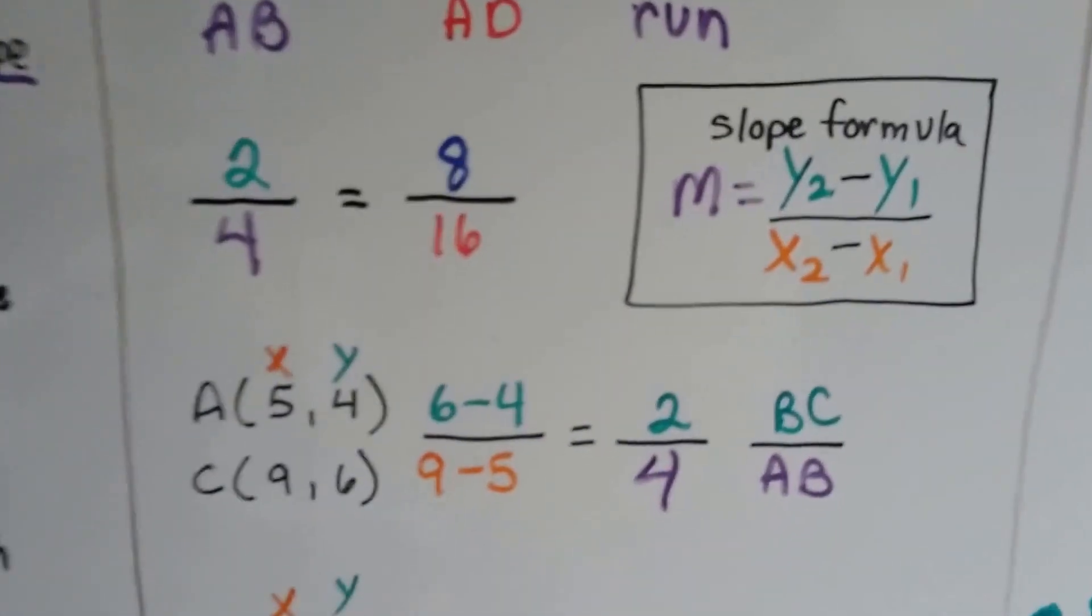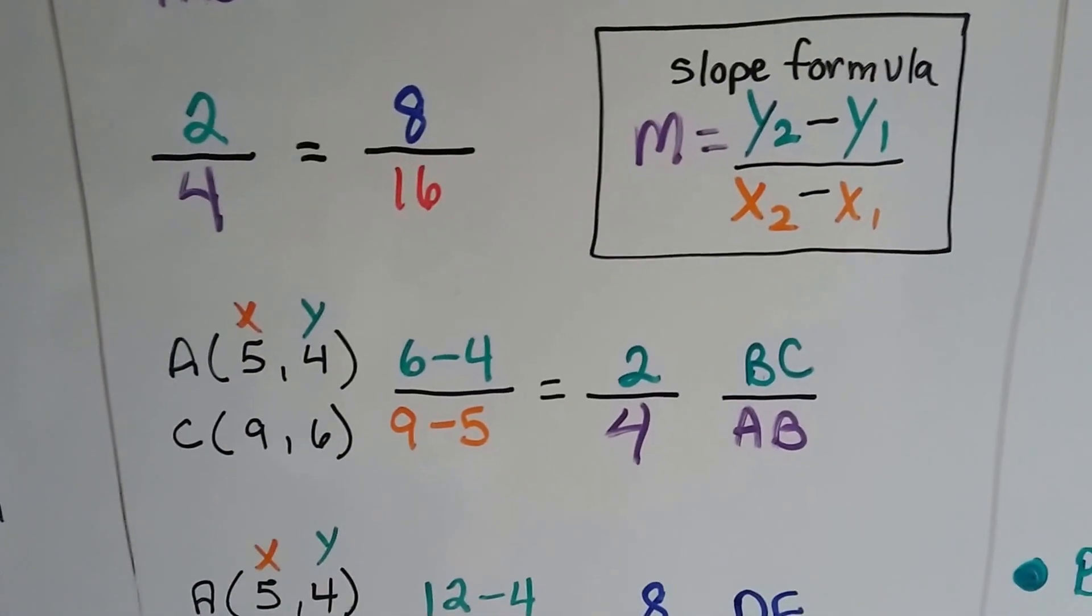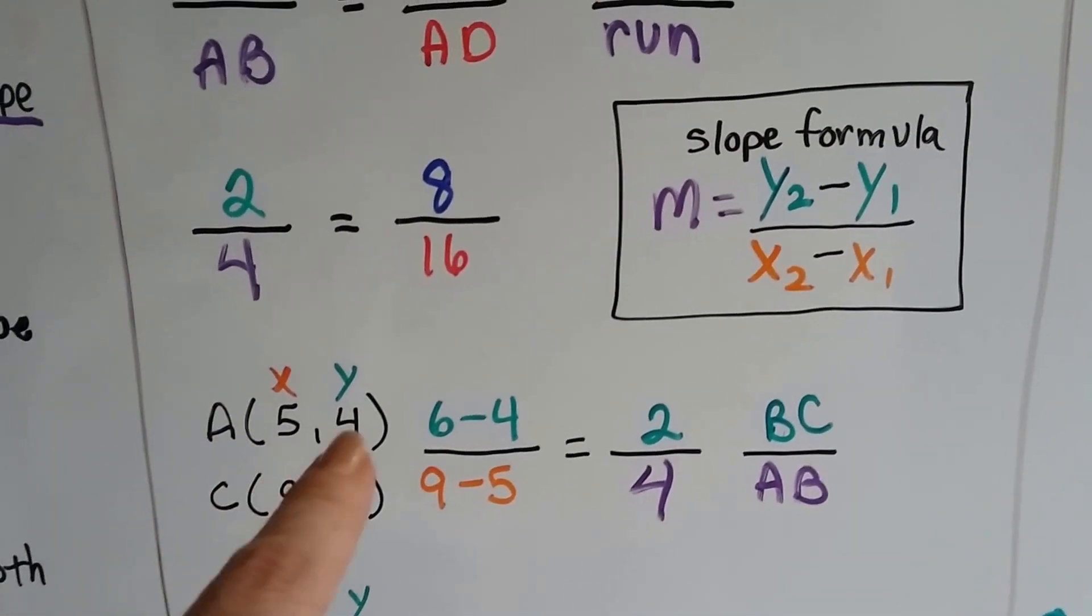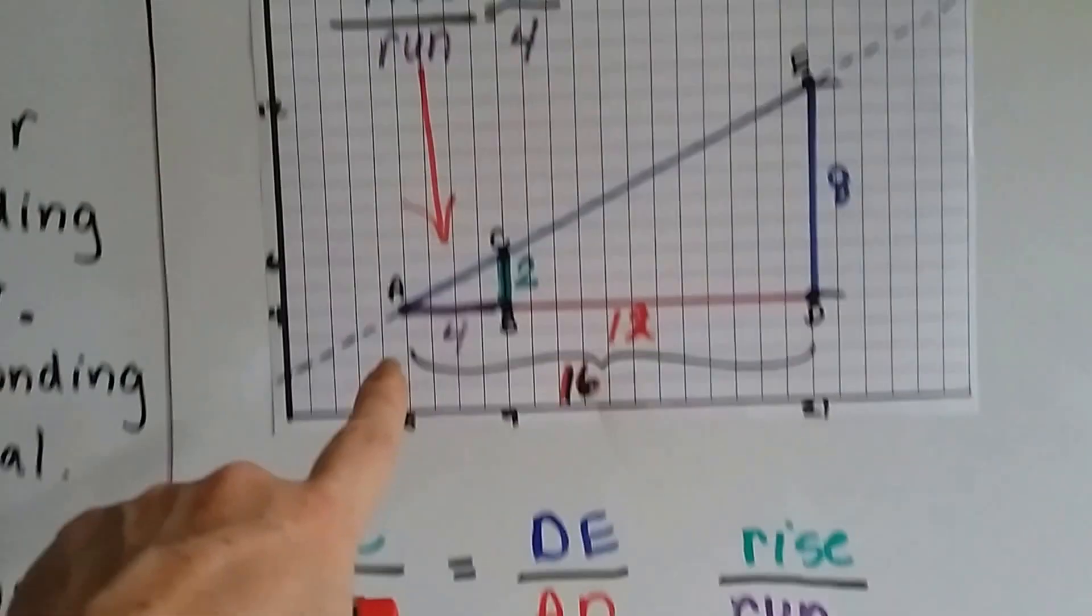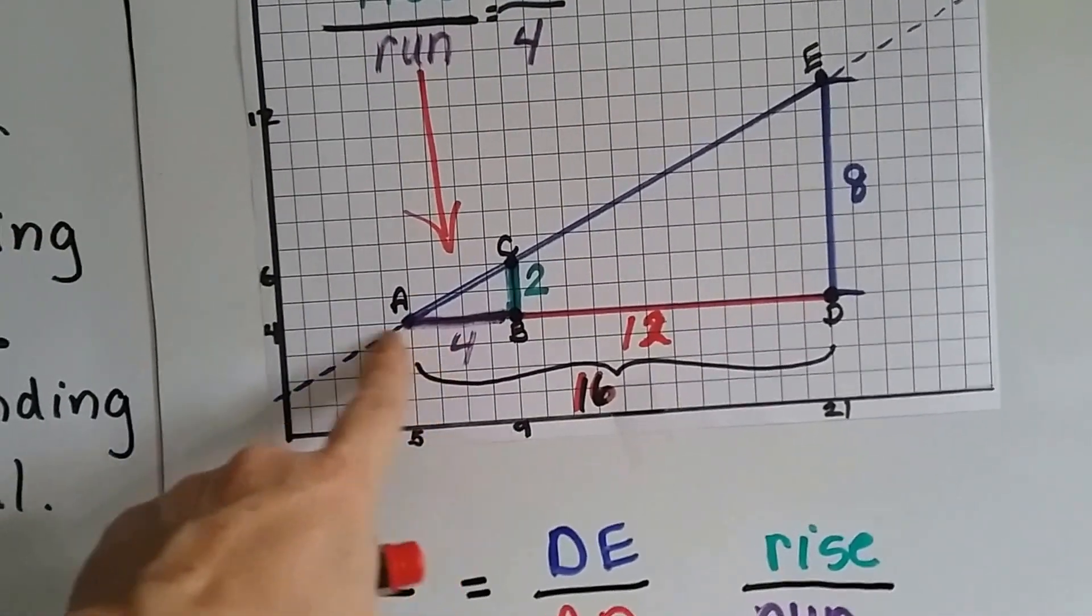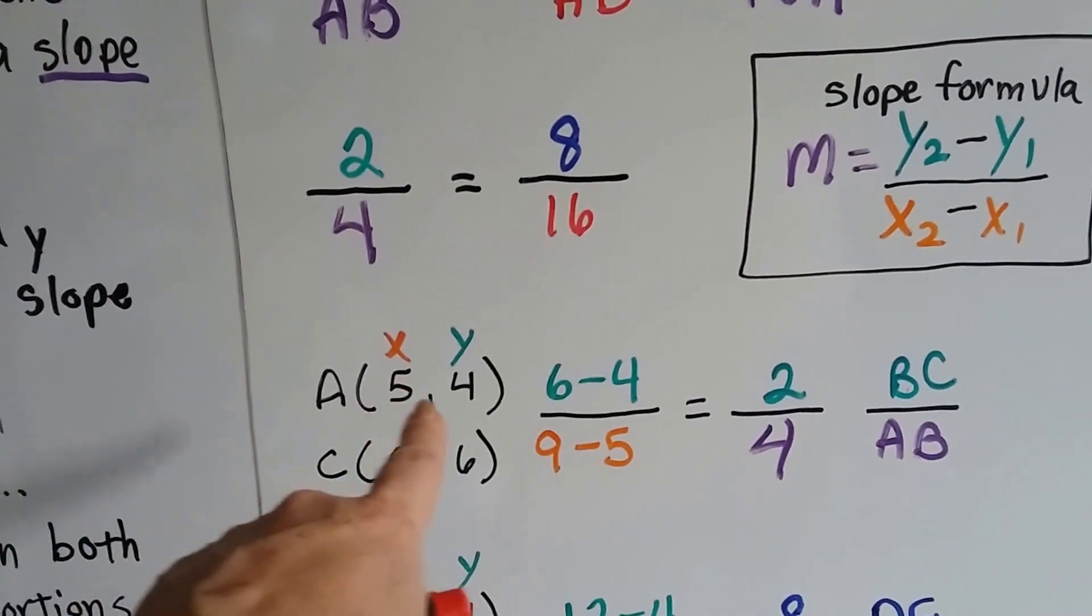Now, to use the slope formula, which a lot of you already know, but I'm just going to go over it really quick. We take the x and y coordinates for point A, and that's right here. On the x, it's a 5, and on the y, it's a 4.